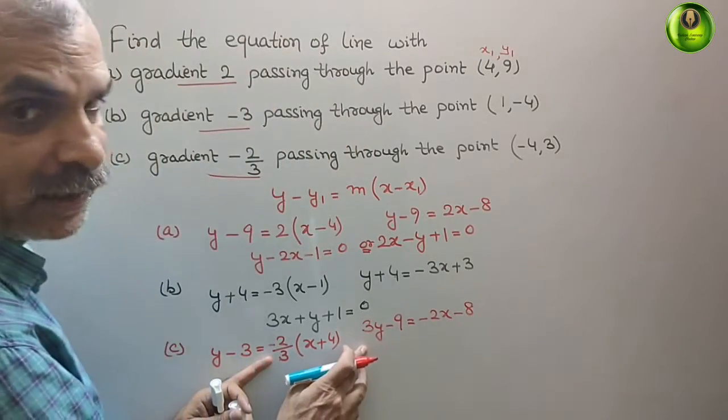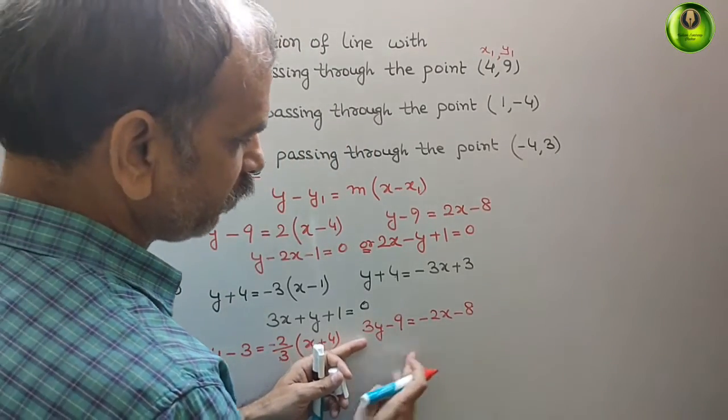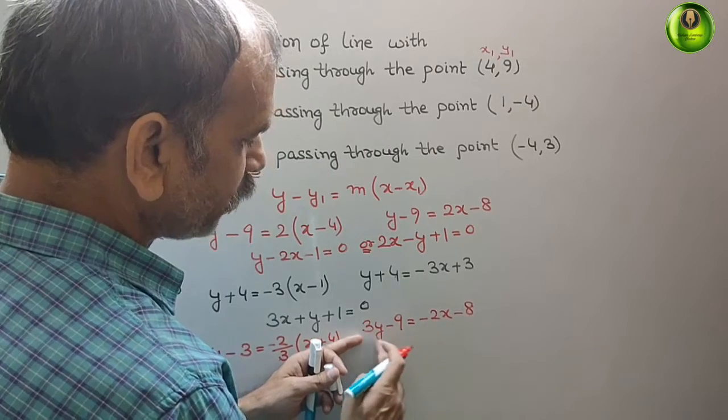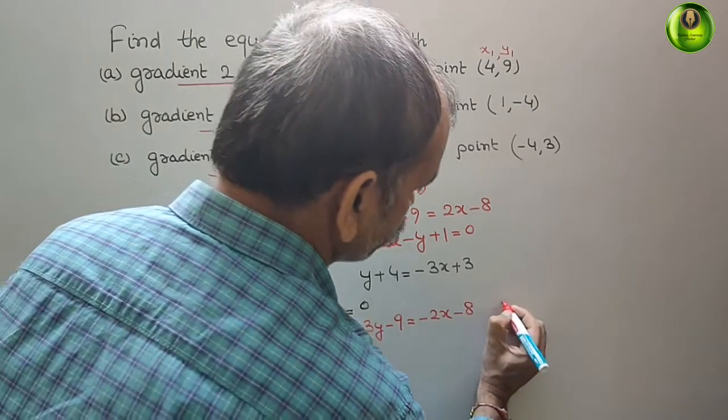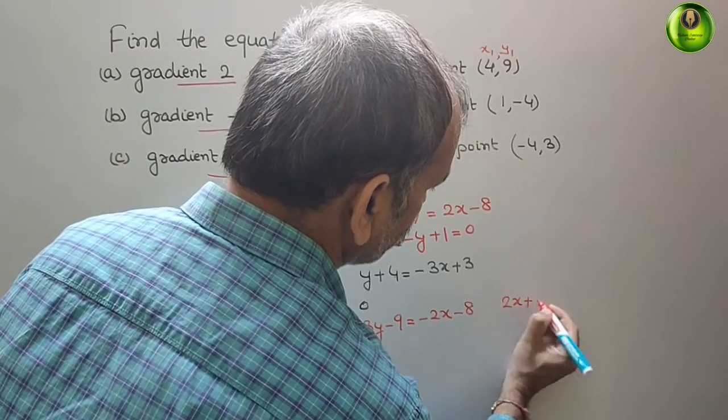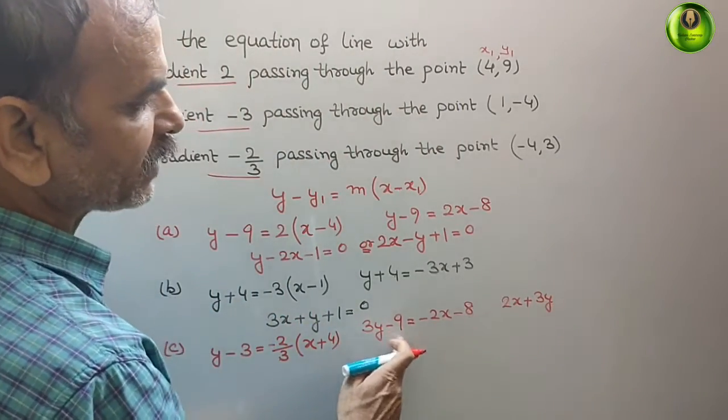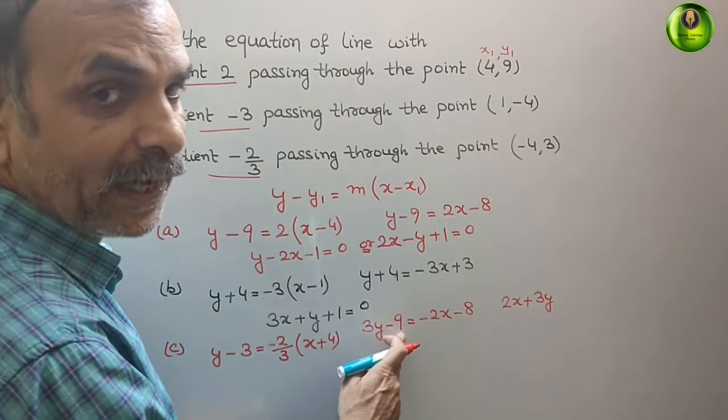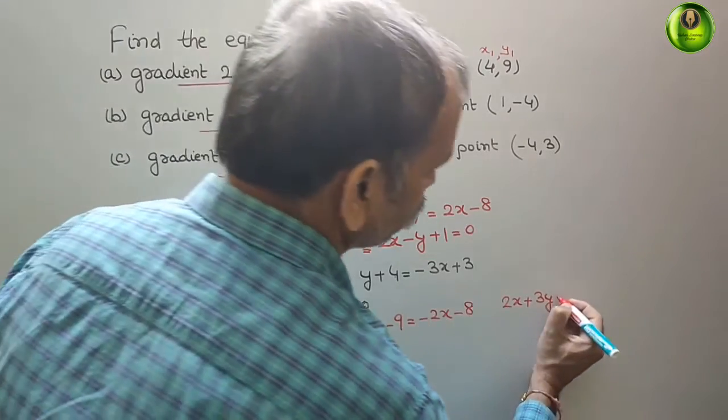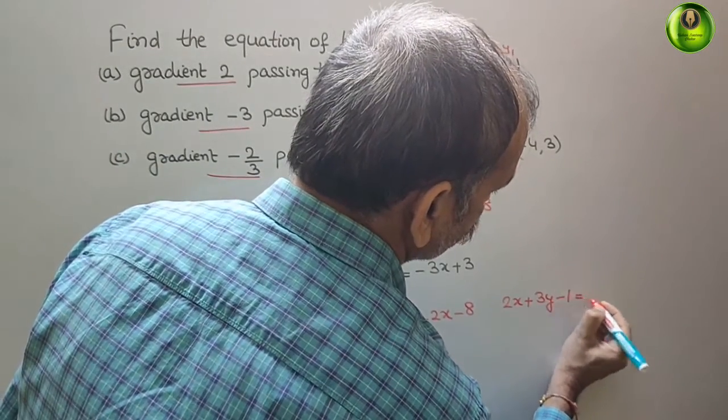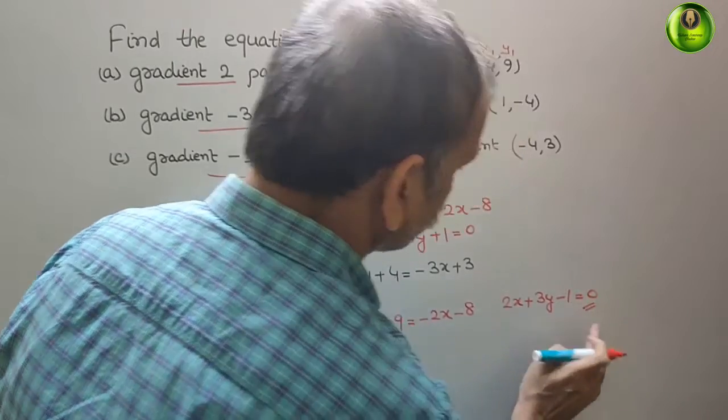Bring everything to this side and arrange it. What it will be? 2x plus 3y. 2x plus 3y. And here it is minus 9. It will become plus 8. Minus 9 plus 8 is minus 1. So this is your equation now.